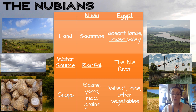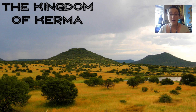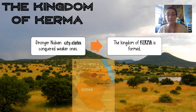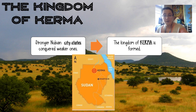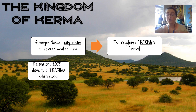The land had similarities, but there were major differences in the way that Nubia and Egypt got their resources, especially their food and water. And we know that geography — that G23 standard again — will impact how people live. The first kingdom we see coming up in Nubia is the kingdom of Kerma. Just like in Mesopotamia and Egypt, we had smaller city-states that eventually conquered weaker ones, leading to the kingdom of Kerma being formed. Here's the Nile River, here's the capital of Kerma, and they controlled a large area.